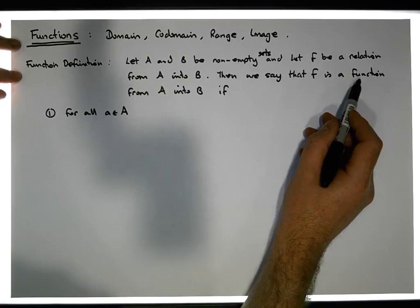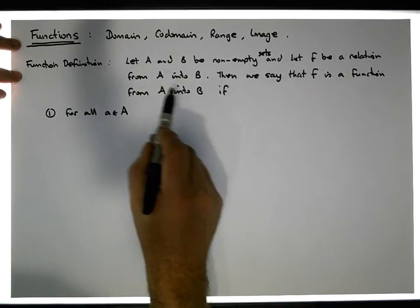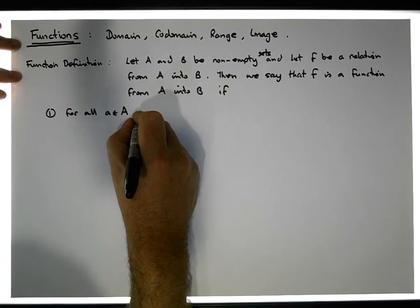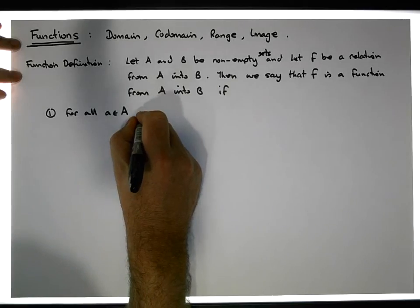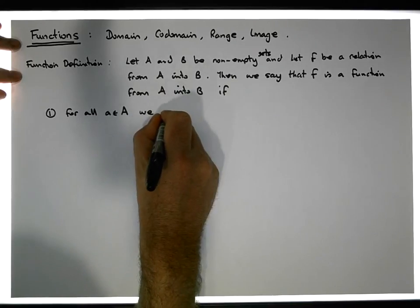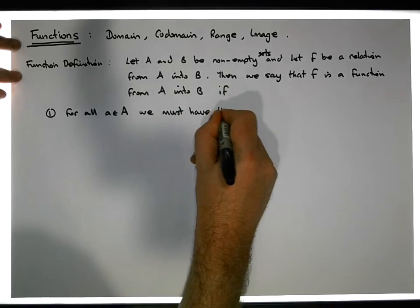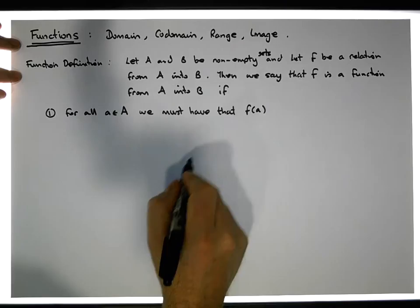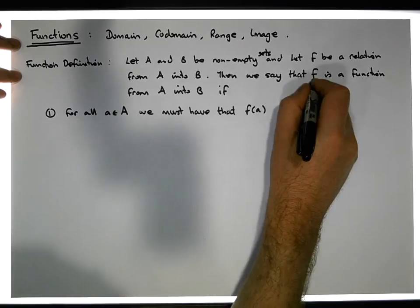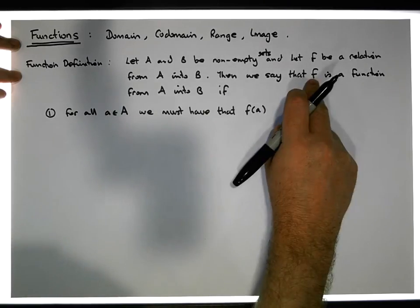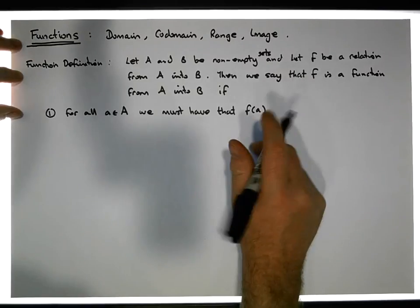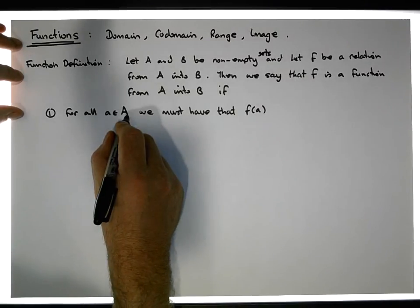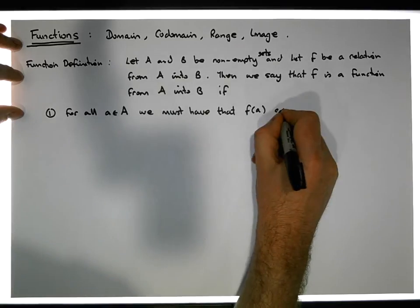And what we're saying here is that f is this relation, and we're going to call it a function from A into B, if for every value in A, for every single value in A, we must have that f(a)—when we pass a into the function or into this particular process—f(a) must exist.